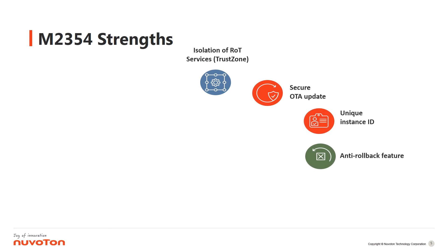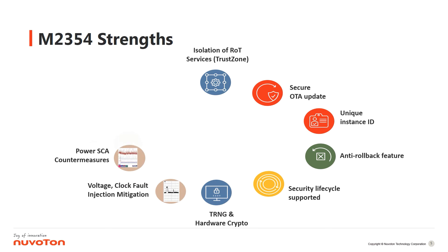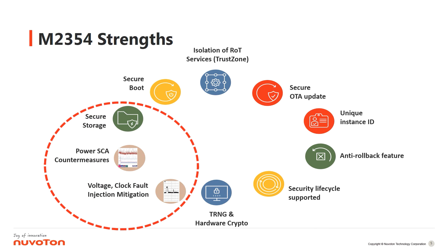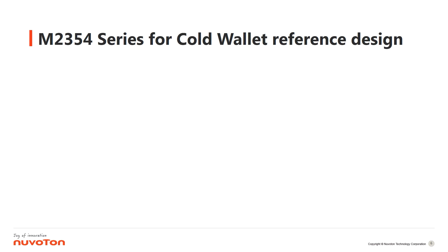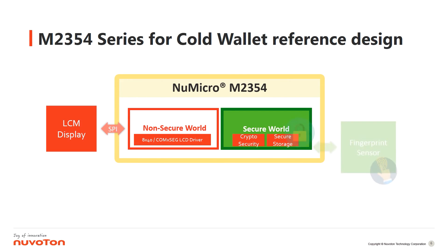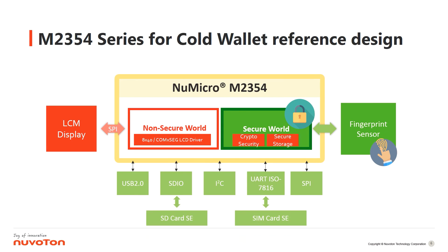The M2354 series has a lot of strengths for cold wallet design. Here I highlight three points most concerned in hardware wallet design: power side-channel attack countermeasures, voltage and clock fault injection mitigation, and chip-level tamper-resistant key storage. Please check the cold wallet reference design in the block diagram. The ARM TrustZone architecture and very complete peripheral interfaces can support fingerprint sensor recognition for user identity. Furthermore, it can use an external SD card or SIM card as secure elements for enhanced device security.